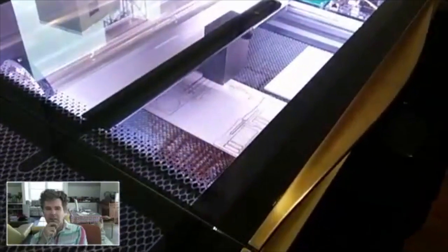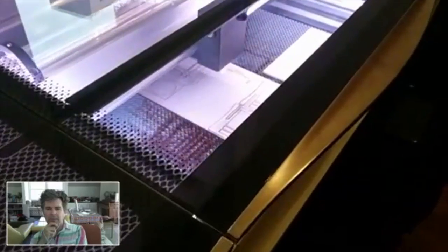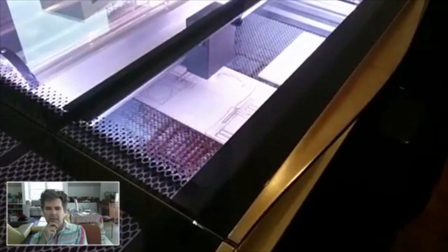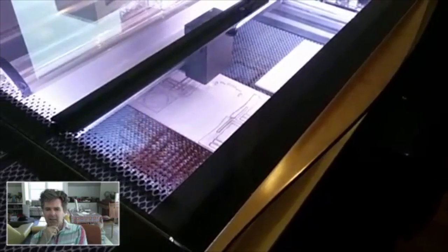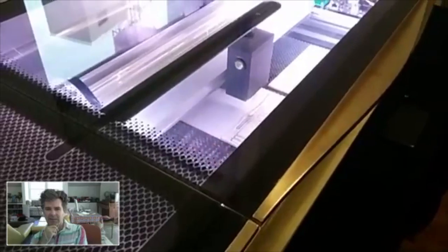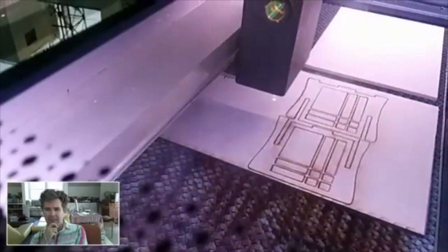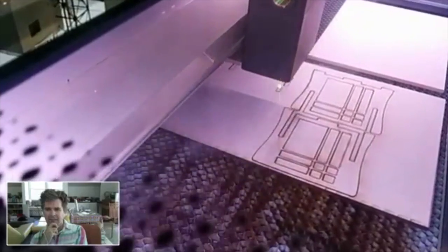The Glowforge starts doing the cut and then you push it through and it cuts a little more, and you push it through and it cuts a little more, and it sees it and realigns it and everything so you don't have to worry about zeroing it out again. That actually lets you do stuff like furniture and really large scale.